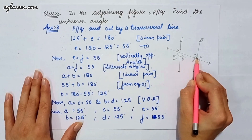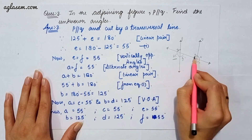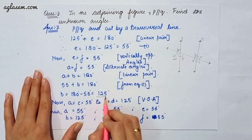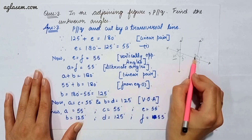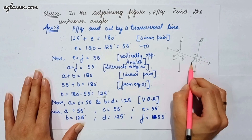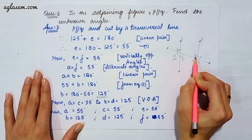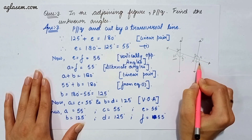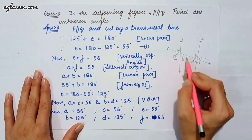Since A plus B equals 180, we get 55 plus B equals 180, so B equals 125 degrees. A equals C as they are vertically opposite angles, so C is 55 degrees. B equals D as they are also vertically opposite angles, so D is 125 degrees. Final answers: A = 55°, B = 125°, C = 55°, D = 125°, E = 55°, F = 55°.